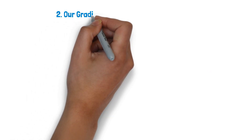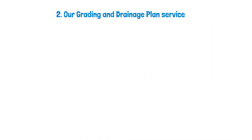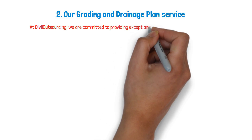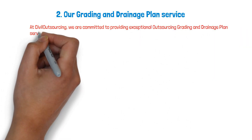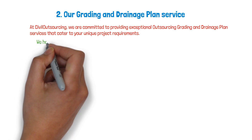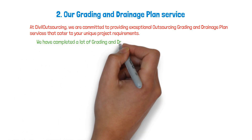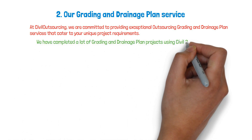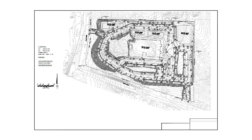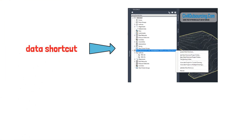At Civil Outsourcing, we are committed to providing exceptional grading and drainage plan services that cater to your unique project requirements. We have completed many projects using Civil 3D and AutoCAD to implement grading modeling, create cross-sections, create surfaces, perform earthwork calculations, and add contour labels. We regularly use data shortcuts to manage data and show it on the plan set.